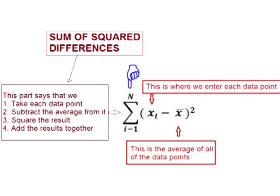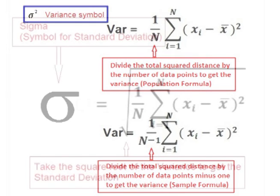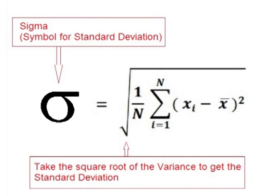The epsilon means to then add the squared totals together. We then divide by the total number of data points to get the average squared distance from the mean — this is also known as the variance. If we are using a sample instead of an entire data population, then instead of dividing by n, we divide by n minus 1. To get the standard deviation, we simply take the square root of the variance.